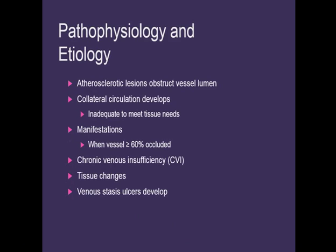With chronic venous insufficiency, you have blood that collects and stagnates, which is called venous stasis. There's increased pressure that impairs arterial circulation as well, leading to not enough oxygen and nutrients getting to that area, which leads to cell death. When you see that breakdown of red blood cells, you'll notice the brown skin pigmentation.